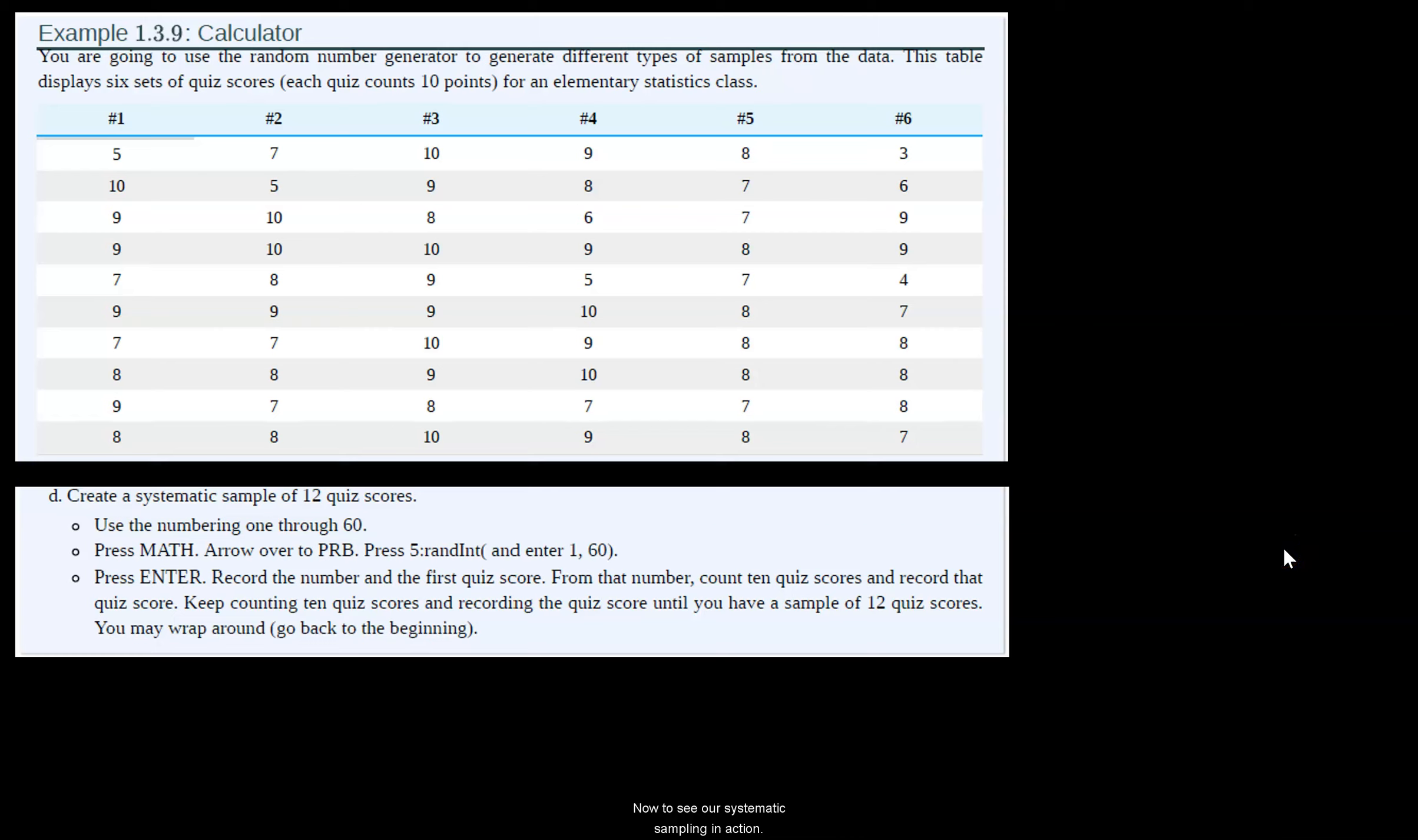Now to see our systematic sampling in action, we're going to create a systematic sample of 12 quiz scores. To create a systematic sample, first we need a starting place. Notice it also tells us count 10 quiz scores, so our k in systematic sampling is going to be 10.